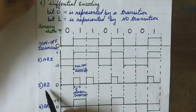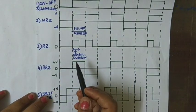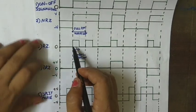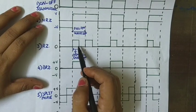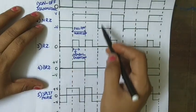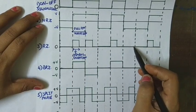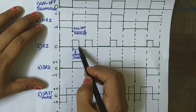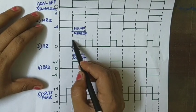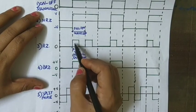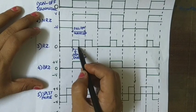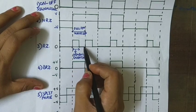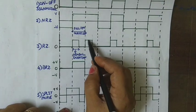The third one is the RZ, that is the return to zero. We have already mentioned that one is transmitted by a positive pulse of half symbol width and zero by no pulse. Wherever there is a zero there is no pulse, and wherever there is a one a half-symbol-width positive amplitude pulse is used. In the full symbol duration, only for half the time is the pulse present at positive amplitude, and for the other half of the symbol width it is not present.